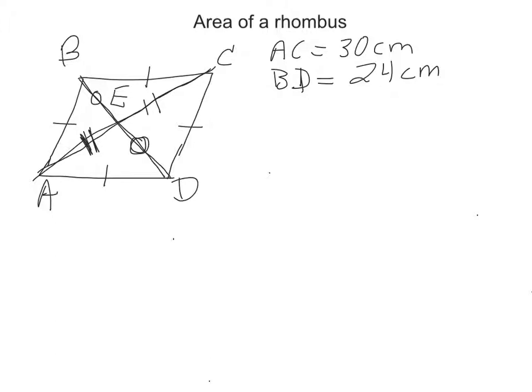So let's look at what they gave us. The first thing they tell us is that AC is 30 centimeters. So that's the entire diagonal there which is good to know. And then they tell us that the other diagonal B to D is 24 centimeters.